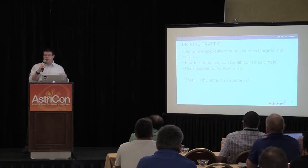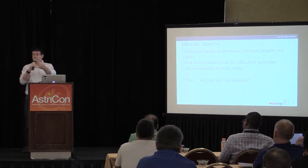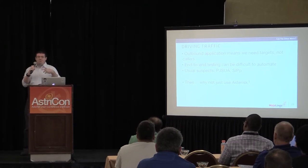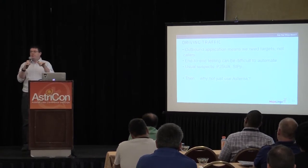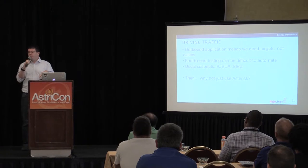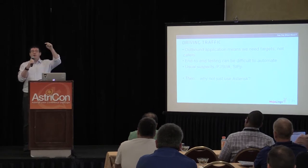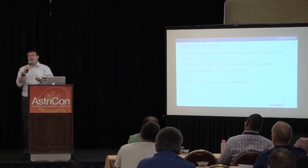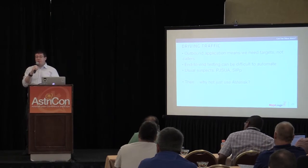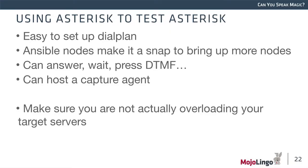End-to-end testing can be difficult to automate because you need agents that will answer, play audio, press one, wait, play more audio, etc. After trying the usual suspects — PJ, SUA, SIPpy, SippyCup (a nice Ruby library to build SIPpy scenarios) — I ended up using Asterisk as the dial target. Just build a simple dial plan: call number 111 and it does something, 222 does something else. It allows deterministic tests and is extremely effective. If you're testing an outbound dialer, just dial other Asterisk servers.